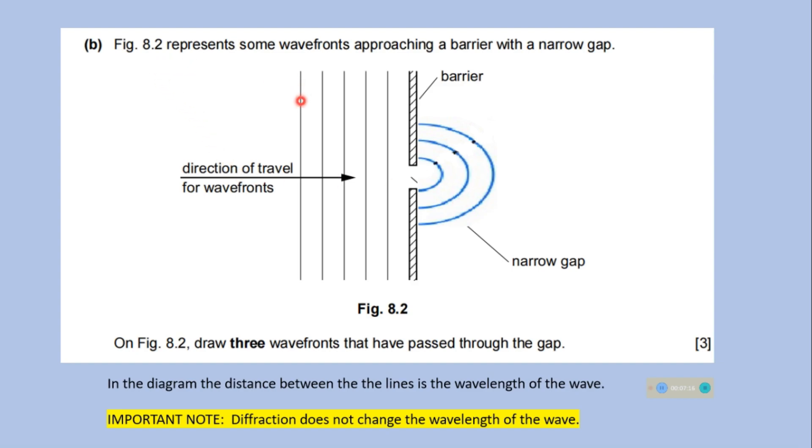In this figure, they show some wave fronts approaching a barrier with a narrow gap. We have to draw three wave fronts that have passed through the gap. We have drawn here three wave fronts. When the waves pass through a narrow gap, the wave will be spread out. It shows a diffraction pattern. In the diagram, the distance between the lines is the wavelength of the wave, and diffraction does not change the wavelength of the wave. So the gap between the wave front after diffraction will be the same as before the waves get diffracted.